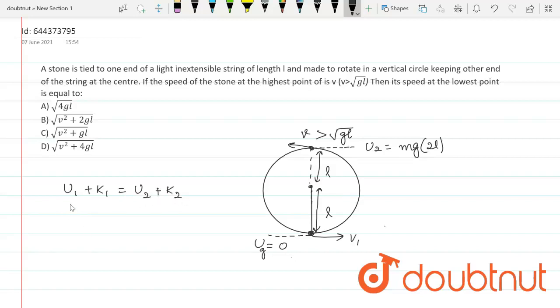So initial potential energy of the system is 0. Initial kinetic energy is half of M into V1 square, which we are supposed to find out in this question, which is equal to MG into 2L plus half of M into V square, where V is the velocity at the highest position. So M gets cancelled out. So I can write V1 square is equal to 4GL plus V square.